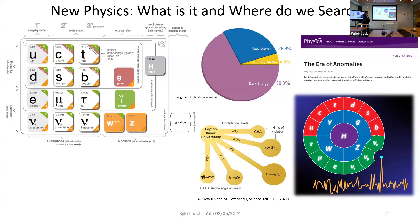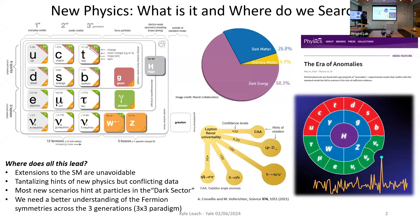One example is lepton flavor universality, where across several regimes—this is from a couple of years ago so some values have changed—things like muon g-minus-2 are 4.2 sigma away based on measurements. However, that doesn't necessarily mean there's a 4.2 sigma hint of new physics; it might mean we don't understand what the standard model is predicting at those levels. Even in this one test you can see many hints outside of three sigma in terms of physics that could look beyond the standard model.